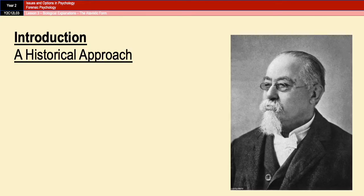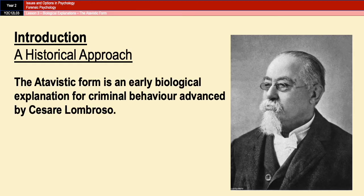The atavistic form is an early biological explanation of offending that was first put forward by Cesar Lombroso. By today's standards, many of Lombroso's methods and conclusions would be regarded as just ridiculous. However, he was one of the first researchers to pioneer a more scientific basis for the study of crime.